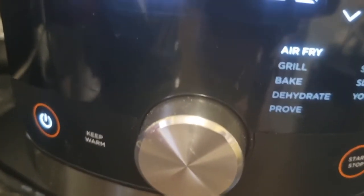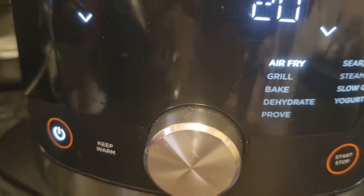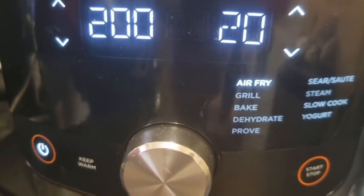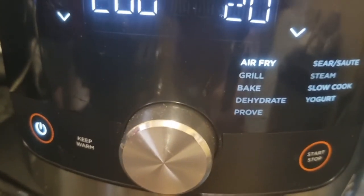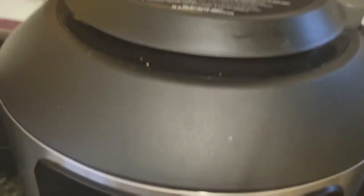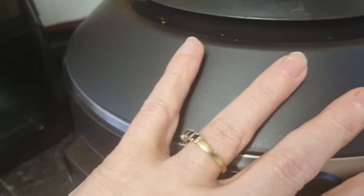And then we go across and we've got air fry, grill, bake, dehydrate, prove, sear, saute, steam, slow cook, and we can make yogurt. Fabulous fabulous fabulous bit of kit.